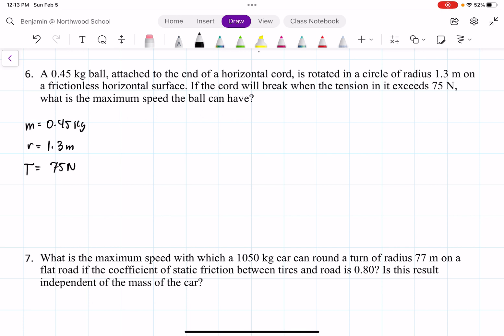So we can write down the equation: net force equals m times a_r, which equals mv² over r. And we're trying to find v. So we know that the net force is just tension, so we have tension equals mv² over r.